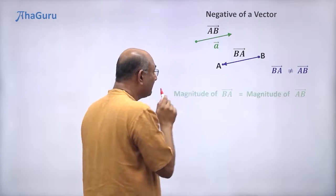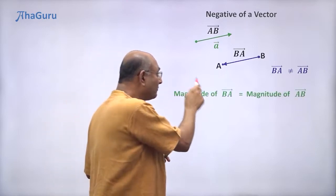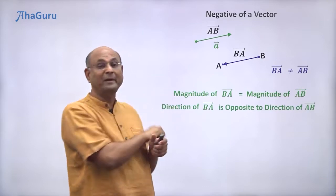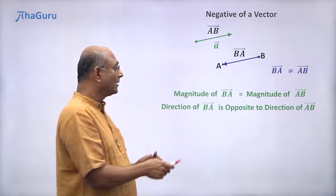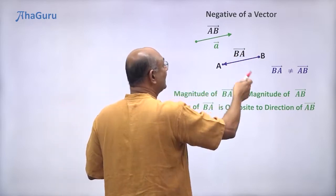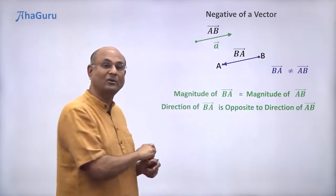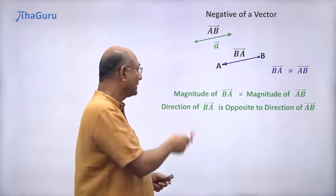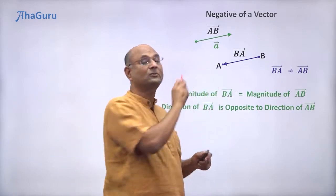They have the same length. Magnitude of BA vector is equal to magnitude of AB vector. And the direction of BA vector is different, but different in a particular way. Direction of BA vector is opposite to the direction of AB vector. It is not just that the directions are different. Direction of BA is opposite to the direction of AB.